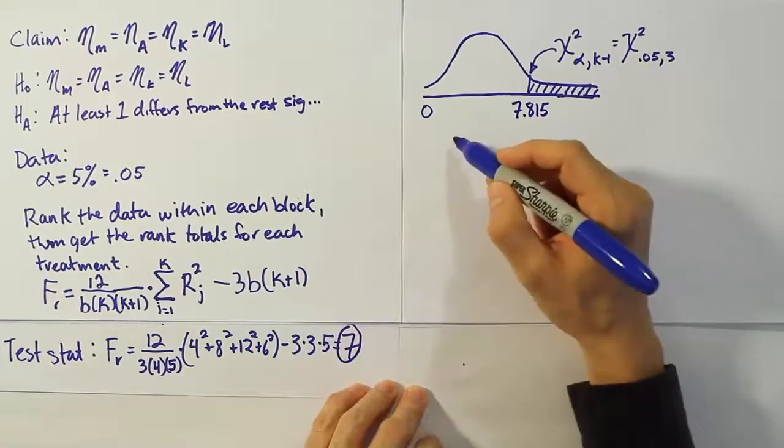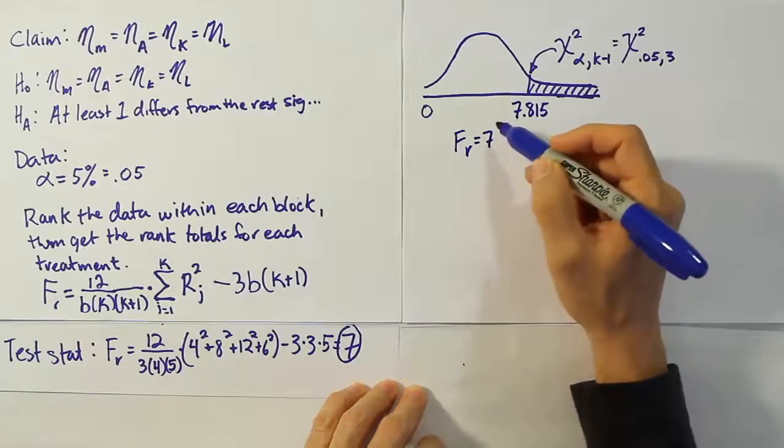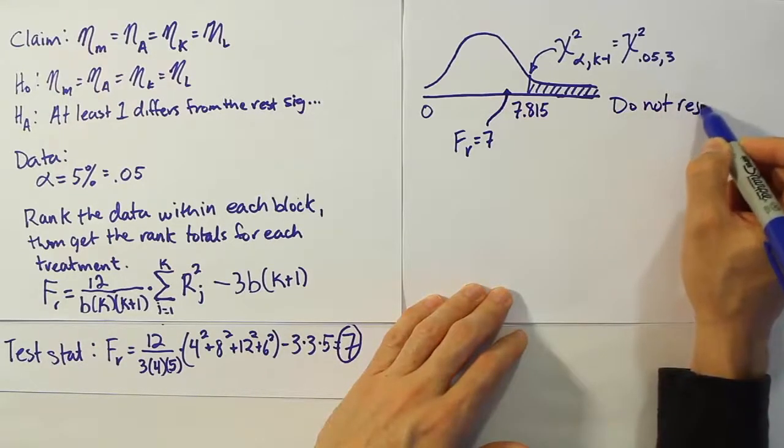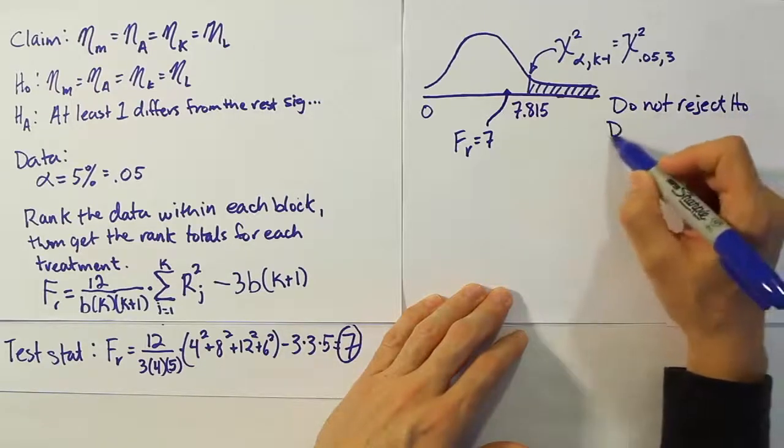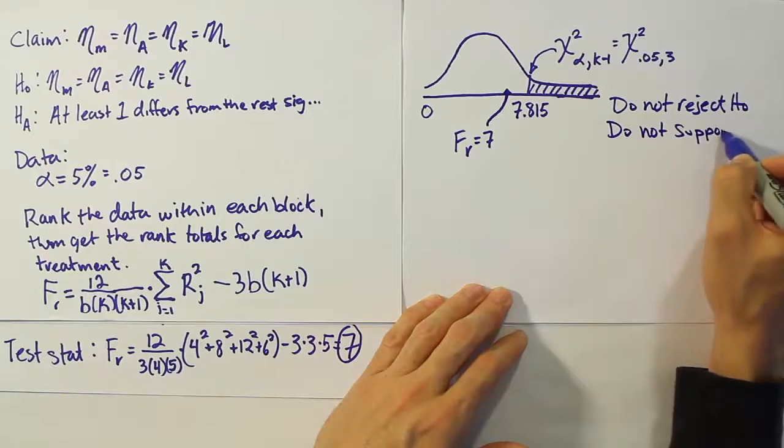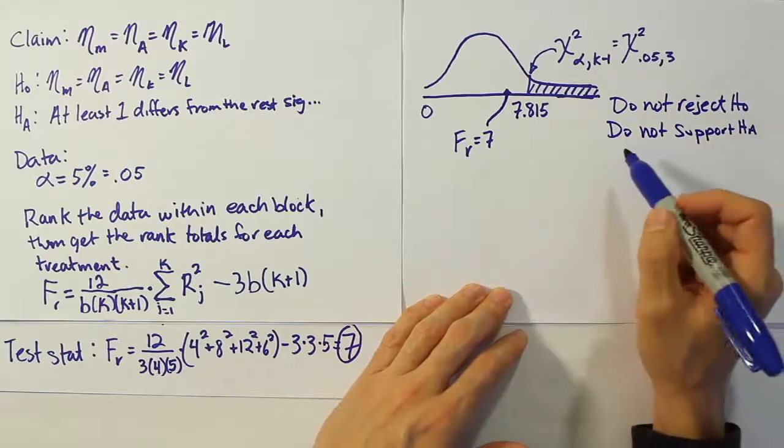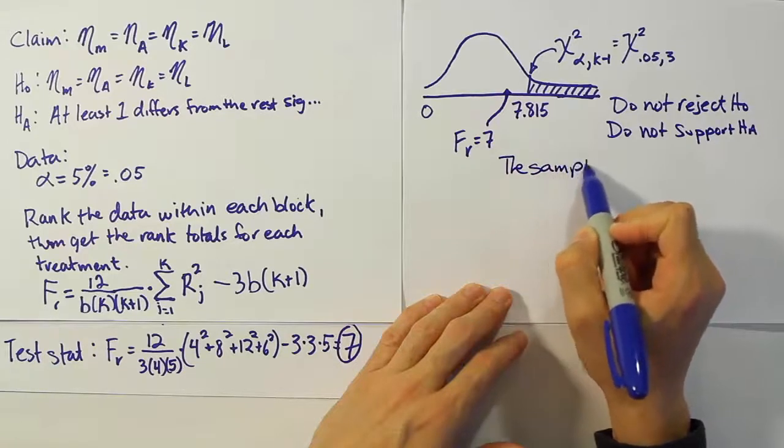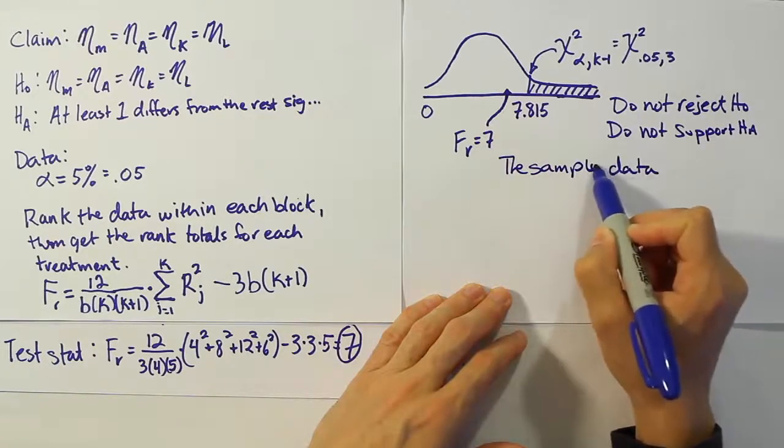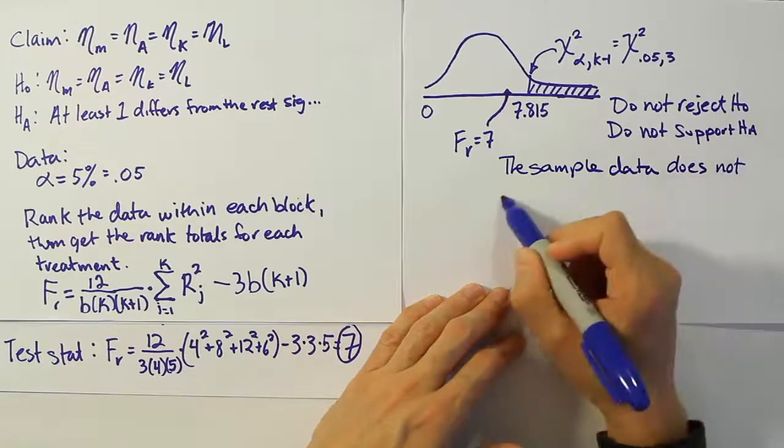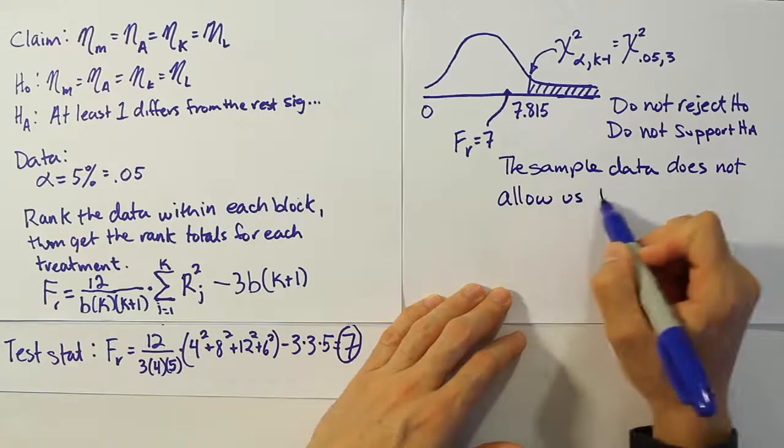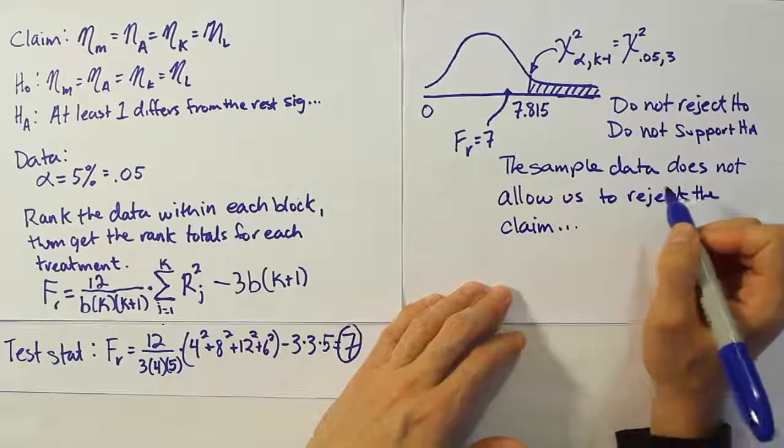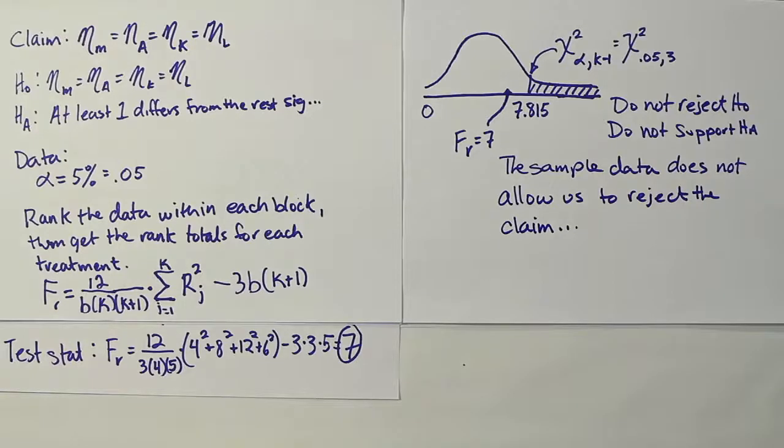That's our critical value. Remember, your test stat was 7. So your Friedman FR test stat was 7. And that test stat lands just before the rejection region. So we're going to say, do not reject H0, and therefore do not support HA. And that means that essentially since our claim is H0, we're going to say the sample data does not allow us to reject the claim. The sample data does not allow us to reject the claim.